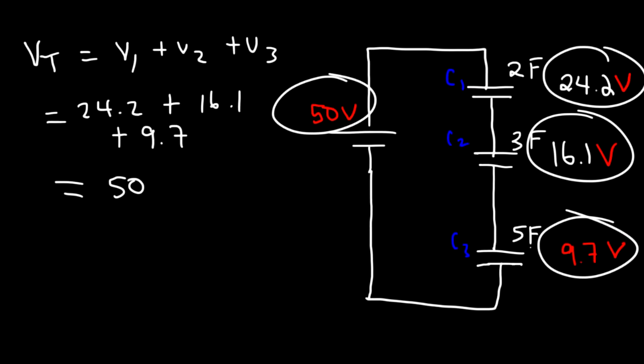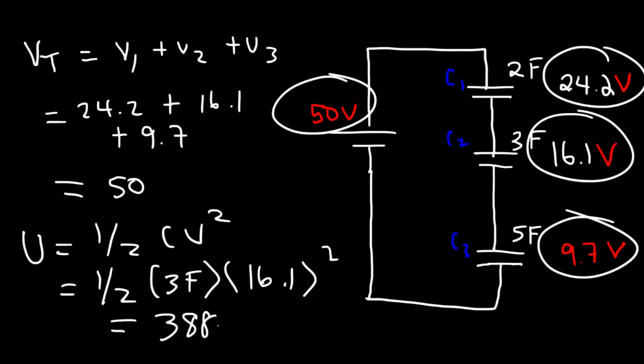Now, let's calculate the potential energy of C2. It's going to be 1/2 CV squared. Now that we have the voltage, we can find the potential energy. So the capacitance is 3 farads, and the voltage across it is 16.1. And so this is equal to 388.8 joules.